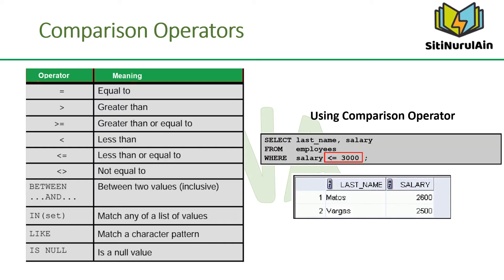The slide shows the comparison operators that are used in conditions that compare one expression to another value or expression. In the example, the SELECT statement retrieves the last name and salary from the employee table whose salary is less than or equal to 3000.